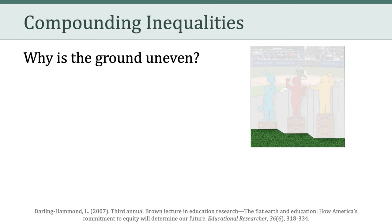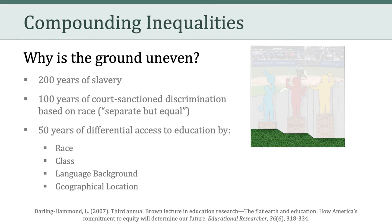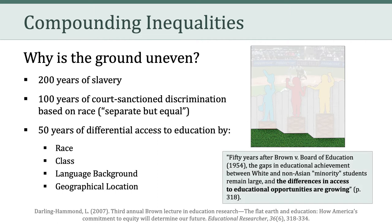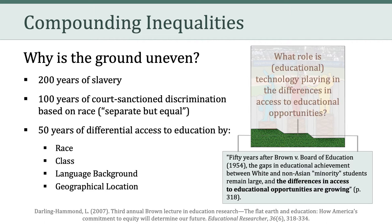Darling-Hammond explains the uneven ground through the concept of compounding inequalities. Within the United States, the ground is uneven because of 200 years of slavery, 100 years of court-sanctioned discrimination based on race and the idea of separate but equal, and then 50 years of differential access to education as determined by race, class, language background, and geographical location. Quite powerfully, she argues that 50 years after Brown v. Board of Education, the gaps in educational achievement between white and non-Asian minority students remain large. And here's the big point: the differences in access to educational opportunities are growing — not shrinking, they're growing. A question I have for all of you is, what role do you think technology has played in those growing differences in access to educational opportunity?